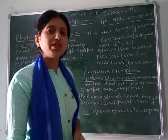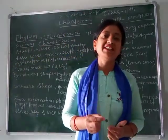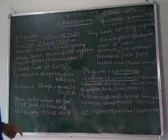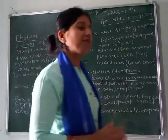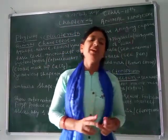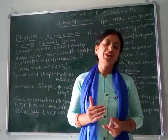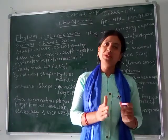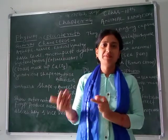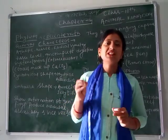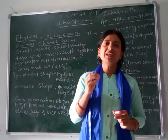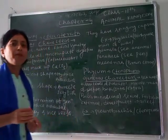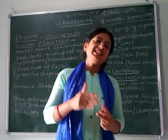First we need to know the general characters of Coelenterata. Why is it placed in phylum Coelenterata? Its general characters are: first, they are aquatic — aquatic means marine or freshwater, meaning organisms that live in water bodies. Water bodies are of two types: marine, which is salty water, and freshwater. Most species of Coelenterata are marine.